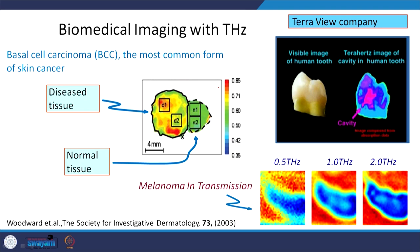You can use terahertz for biomedical imaging. For example, if you have a cell where a part of it has some disease, you can see in the imaging that the diseased tissue shows highlighted areas in color, while normal tissue does not show this.